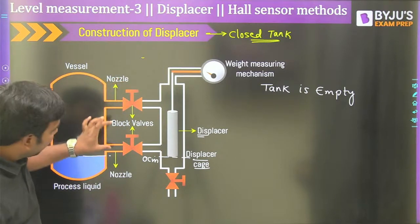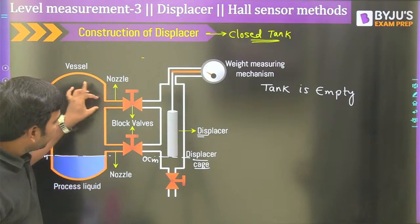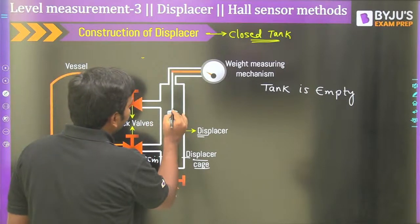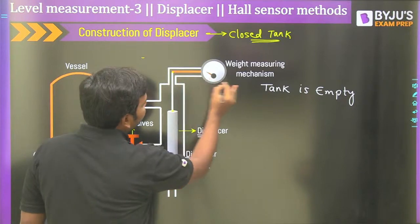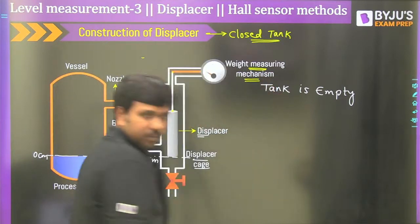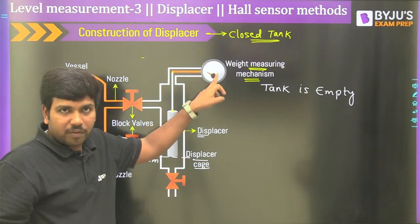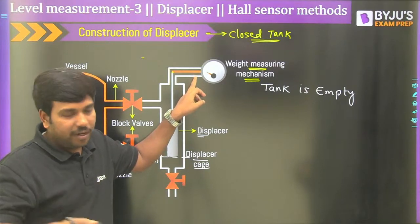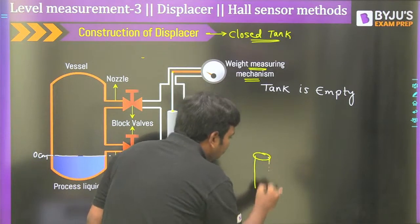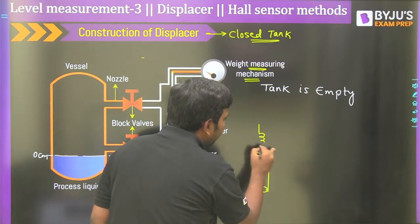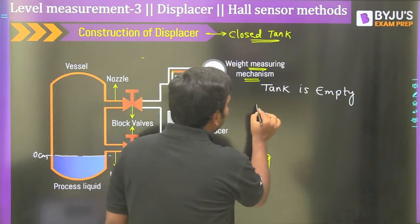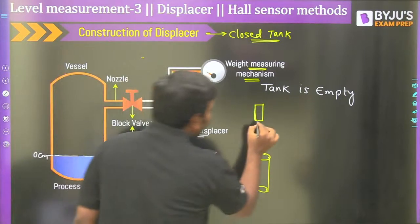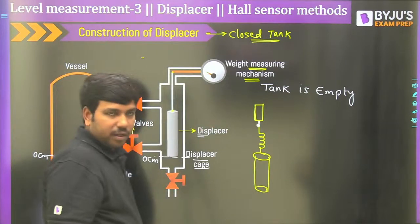As promised at the start of the session, let us now move to another technique: the Hall sensor. Let us take a three-dimensional conductor. We will apply a voltage source with a series resistance connected to two opposite side faces. The direction of conventional current will flow through the conductor from one side face to the other, while electrons move in the opposite direction.